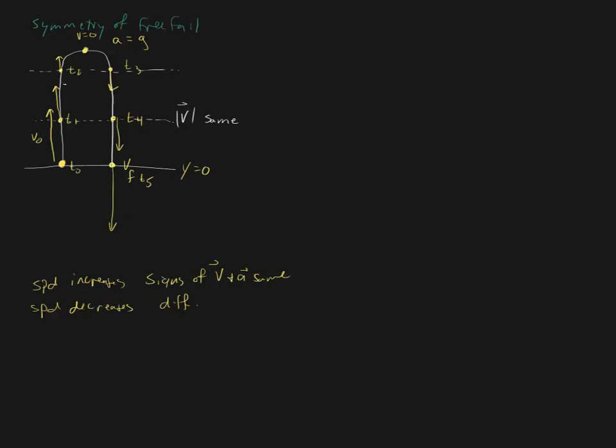We could also take note that the time interval from here to here I'll call delta t1. This one we'll call delta t2. Well here delta t3 is equal to delta t2. And here delta t4 is equal to delta t1. So again these are all symmetries that we see within free fall.